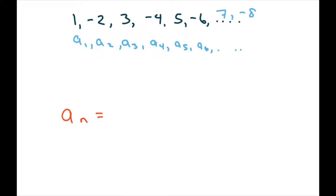The first thing I notice is we have this alternating sequence — plus, minus, plus, minus, plus. To handle that, we have to write negative 1 to the n minus 1. We write n minus 1 because we're starting with positive. Now if you do that, we've taken care of the alternating signs.